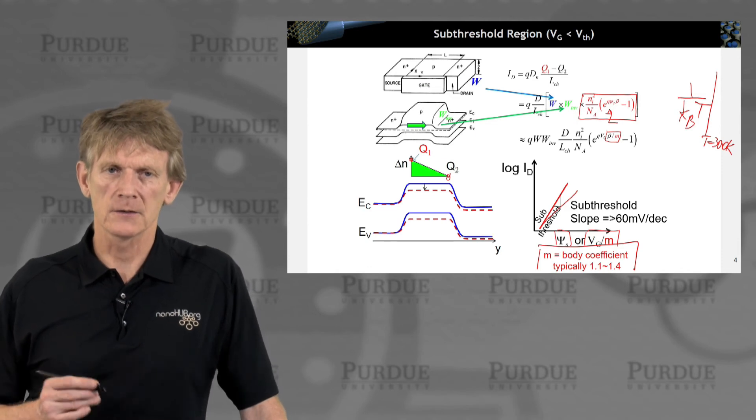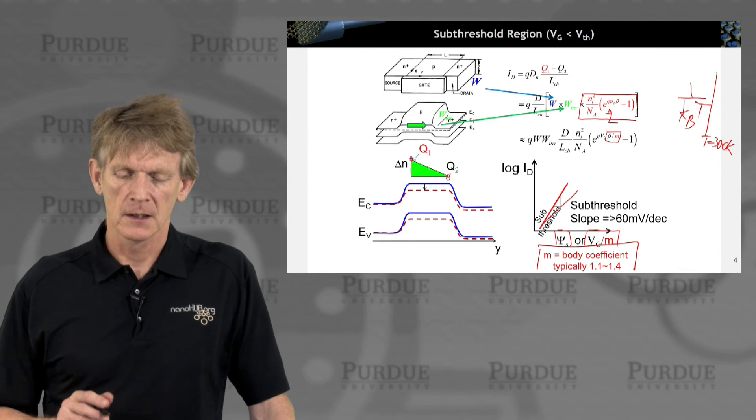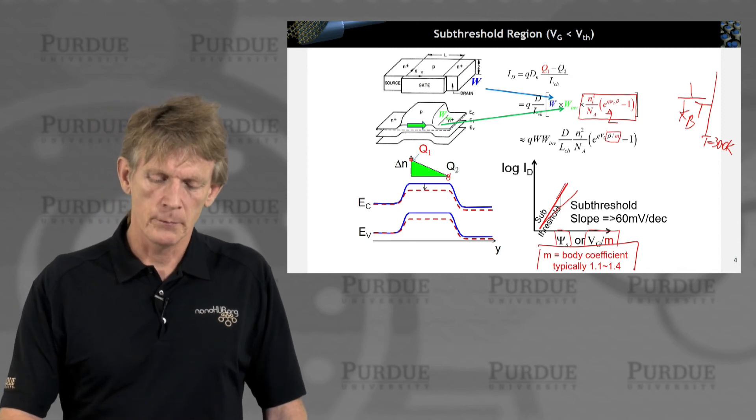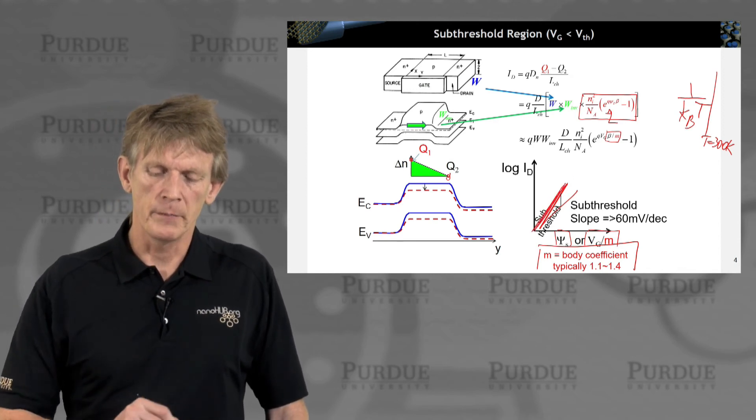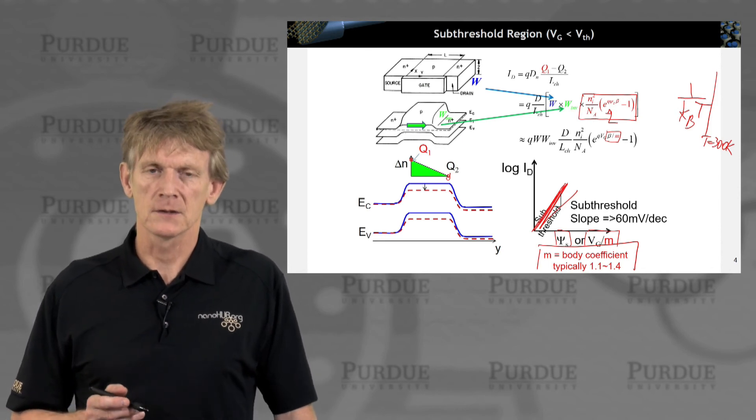In nanoscale transistors, the non-ideality is from some other effects. But this slope is the best, turn-on is the best you can potentially expect from a transistor like this.